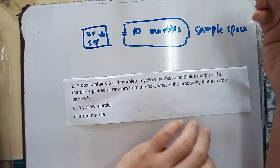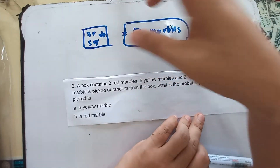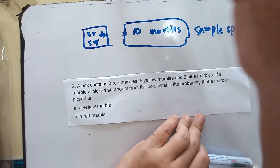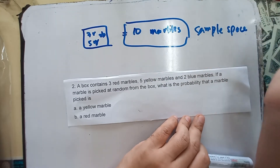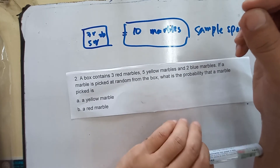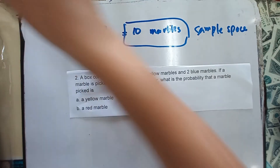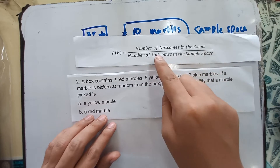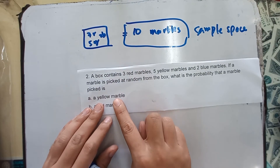The sample space is the ten marbles here. When you are going to pick a marble, you can obtain red, yellow, or blue — so that is the sample space. Now let's get the event. The number of outcomes in the event over the number of outcomes in the sample space is our formula. The event here is to pick a yellow marble.